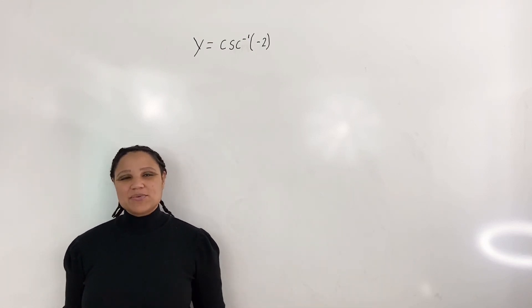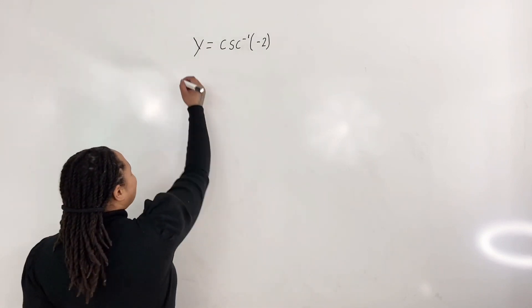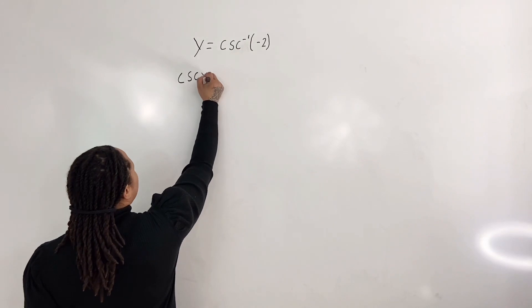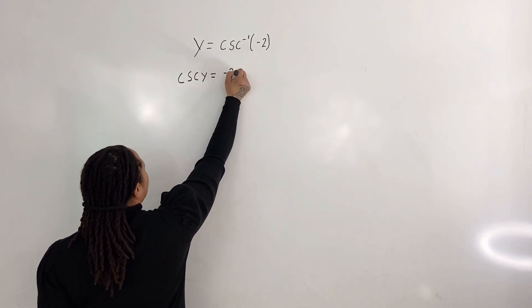So the first thing I want to do is I want to take the cosecant of both sides. So we get cosecant y is equal to negative 2.